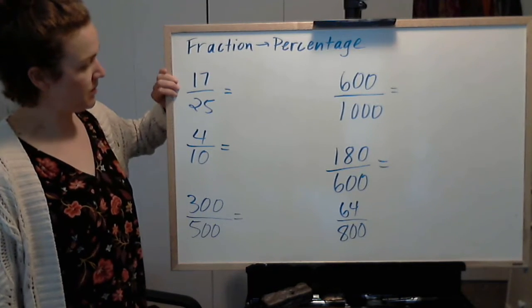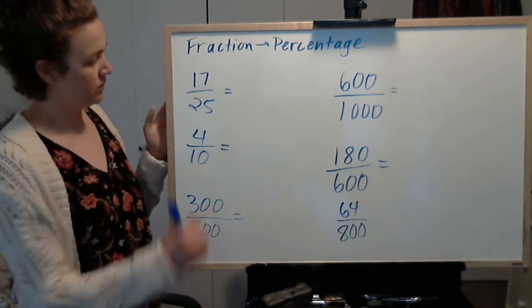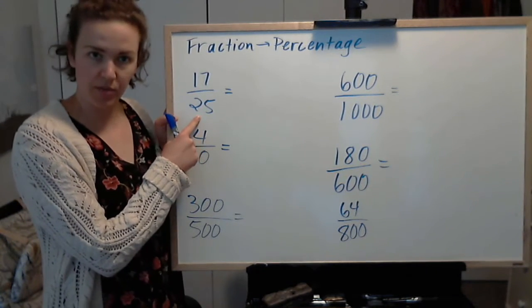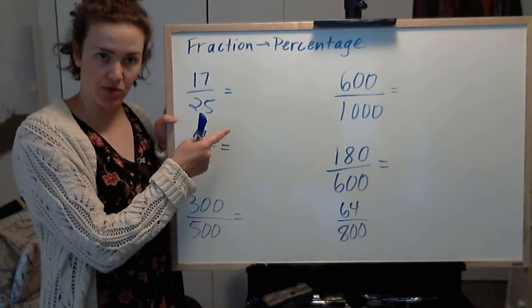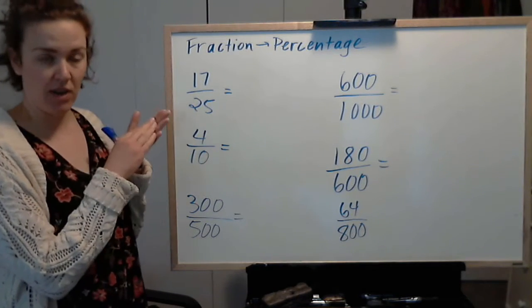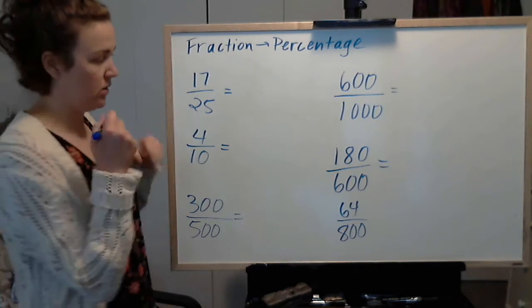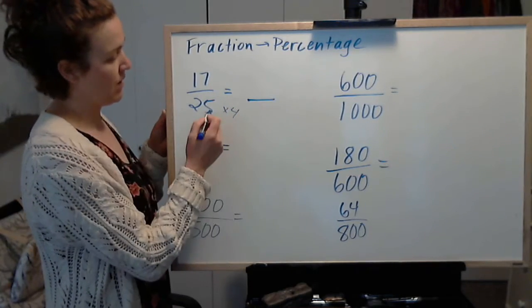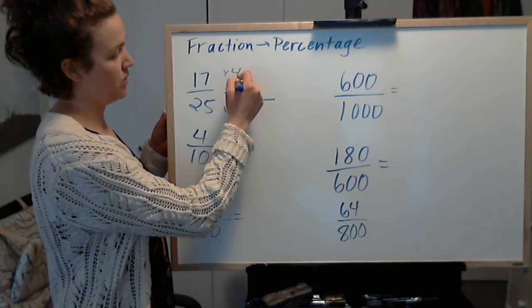First example: 17 out of 25. I look at my denominator and I say, what do I need to multiply or divide this by to get to 100? 25 times 4 is 100, so we need to multiply by 4. And if I multiply the bottom by 4, I have to multiply the top by 4 too.